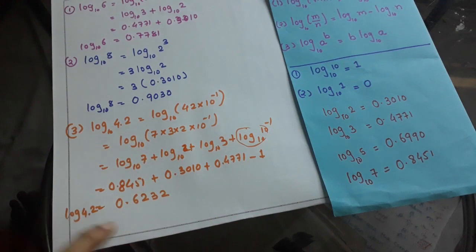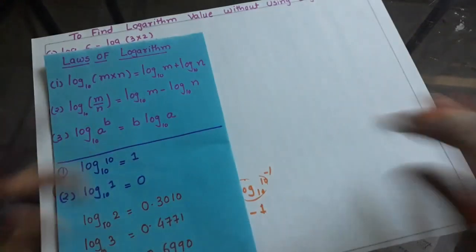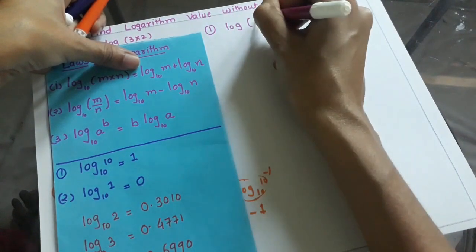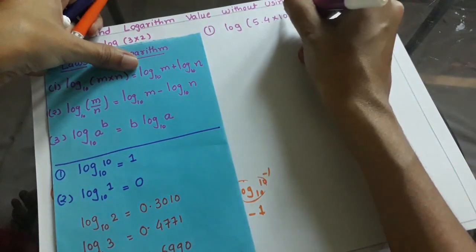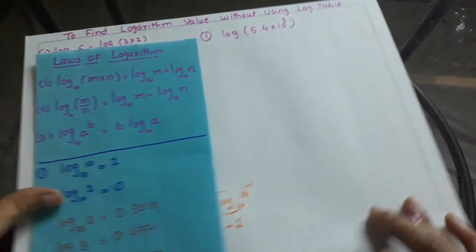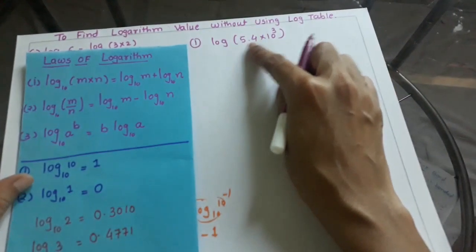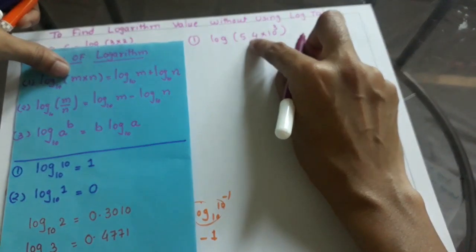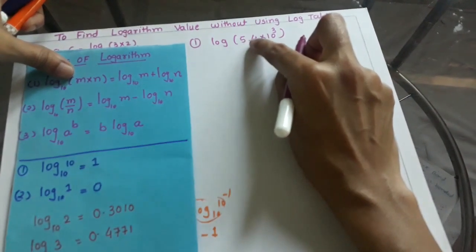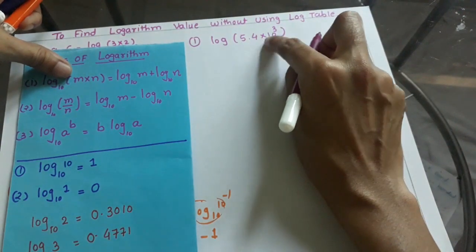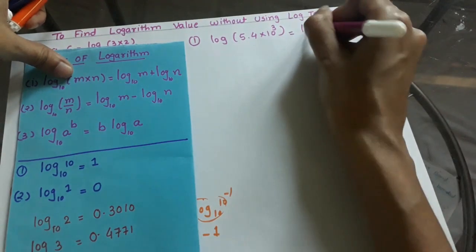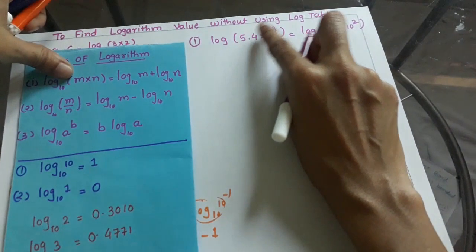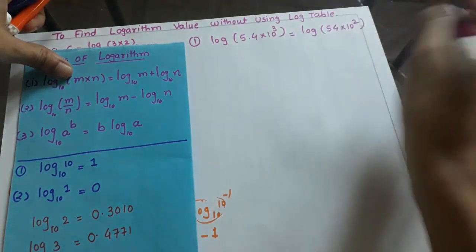Next, we will find log of 5.4 × 10³. First, we remove the decimal: 5.4 = 54 × 10⁻¹. So the expression becomes log(54 × 10⁻¹ × 10³) = log(54 × 10²), because 10⁻¹ × 10³ = 10².